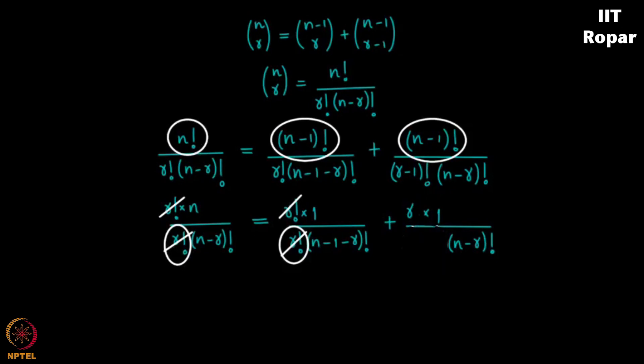Then the next step: I am multiplying throughout by n minus r factorial. That gives a little observation — one more step tells me this simply makes the first term n minus r. So n equals n minus r plus r, and r minus r gets cancelled, which implies n equals n. Of course left hand side is equal to right hand side, and so you go back and say that the formula is indeed right.